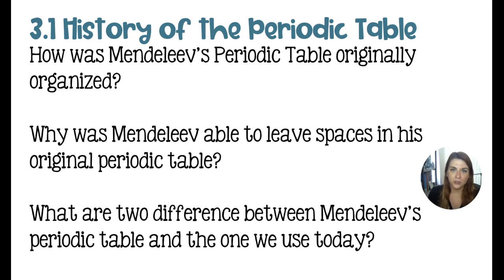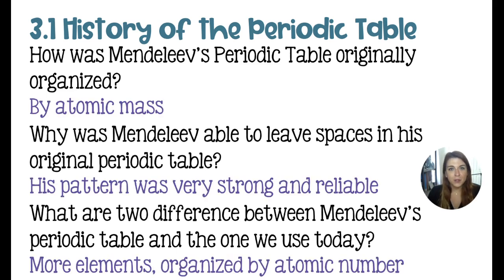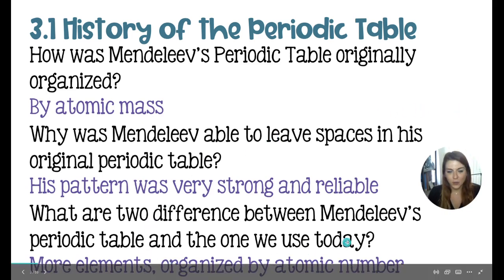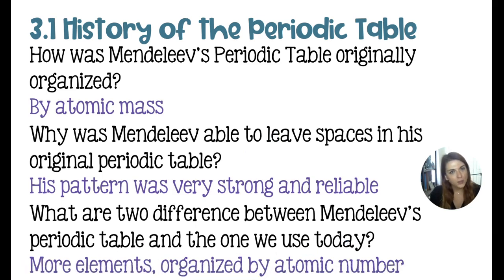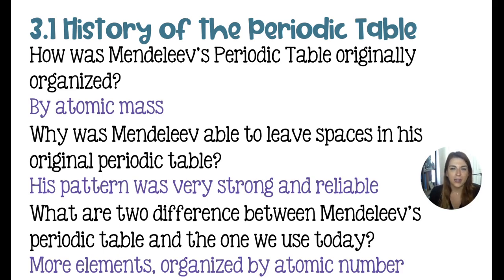Make sure to pause the video to answer the question. Mendeleev's Periodic Table was originally organized by atomic mass. The difference between Mendeleev's table and the one we use today is that there are more elements on it and it is now organized by atomic number. Mendeleev was able to leave spaces in his Periodic Table because his pattern was super strong and reliable — that's how he knew that missing elements just hadn't been discovered yet, not that they were absent from his pattern.